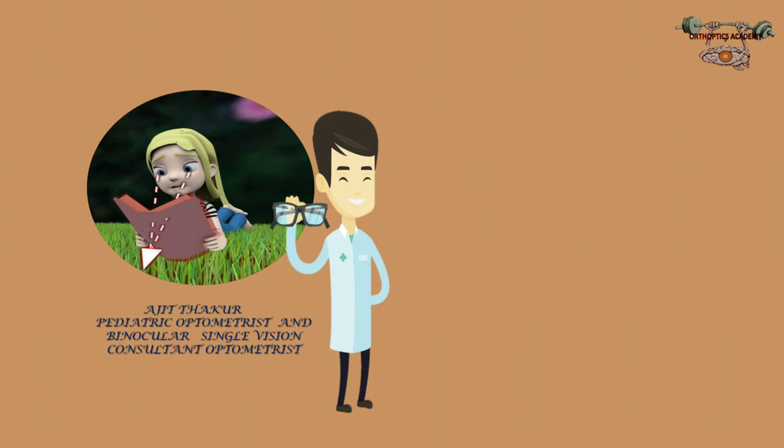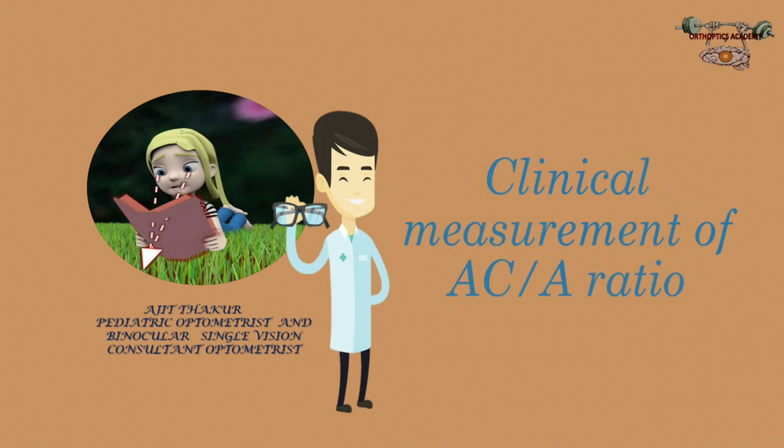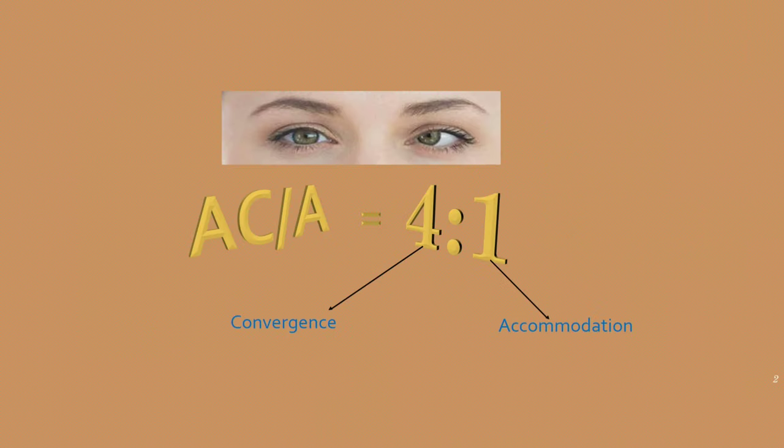Hello friends, I am back with a new topic: the clinical management of AC/A ratio. What does it mean? Four is to one. Basically, every diopter of accommodation needs four diopters of convergence.